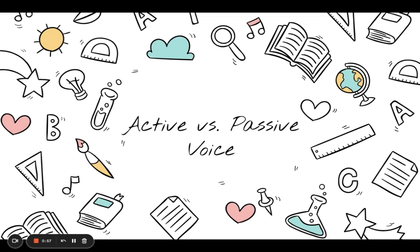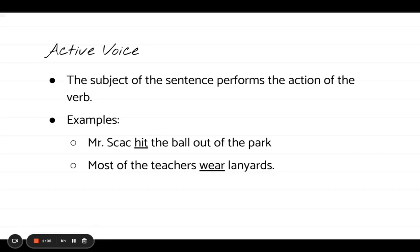Let's start with active voice, because that is probably the easier of the two voices to start with. Active voice is simply when the subject of the sentence performs the action of the verb. That sounds really easy — you might be thinking that every single sentence starts this way, but honestly, it actually does not.